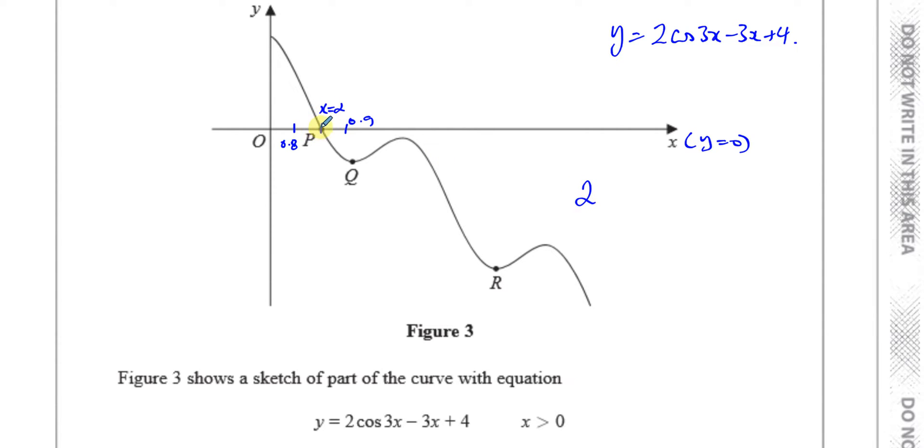So I know that the roots, or the solution for alpha, x equals alpha, x will equal the root alpha when 2 times cosine 3x minus 3x plus 4 equals 0. That's the equation I need to solve to find alpha. So let me call this equation f of x equals 2 cosine 3x minus 3x plus 4.